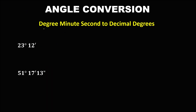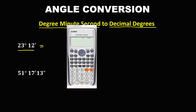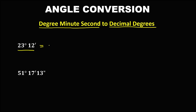Now for the reverse conversion: degrees, minutes, and seconds to decimal degrees. For the given 23 degrees and 12 minutes, convert to decimal degrees. Using the calculator: input 23 then the degree-minute-second function, then 12 and the degree-minute-second function, then equals. The result is 23.2 degrees.